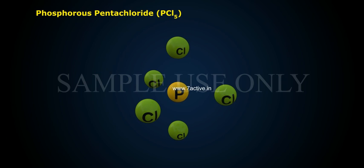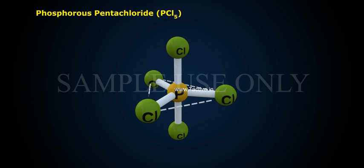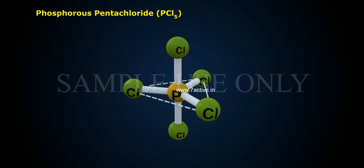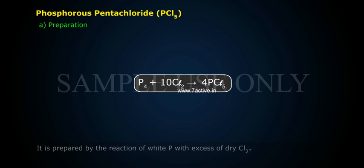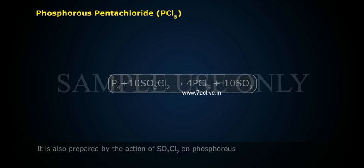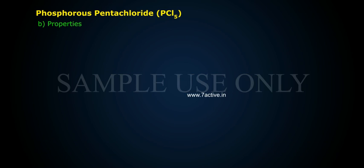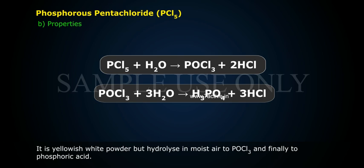Phosphorus Pentachloride (PCl5). Preparation: It is prepared by the reaction of white phosphorus with excess of dry Cl2. It is also prepared by the action of SO2Cl2 on phosphorus. Properties: It is a yellowish-white powder but is hydrolyzed in moist air to POCl3 and finally to phosphoric acid.